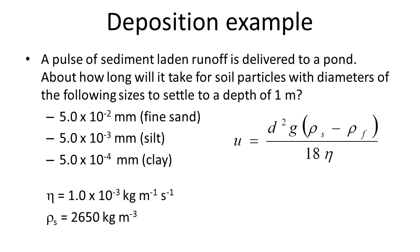Let's consider some examples. Imagine we have a pulse of sediment-laden runoff delivered into a pond. We want to calculate approximately how long it would take for soil particles with the following diameters to settle to a depth of one meter: fine sand at 5×10⁻² millimeters, silt at 5×10⁻³ millimeters, and clay at 5×10⁻⁴ millimeters. We'll set the viscosity of the fluid to 1×10⁻³ kilograms per meter per second, and assume the density of the solids is 2650 kilograms per cubic meter.